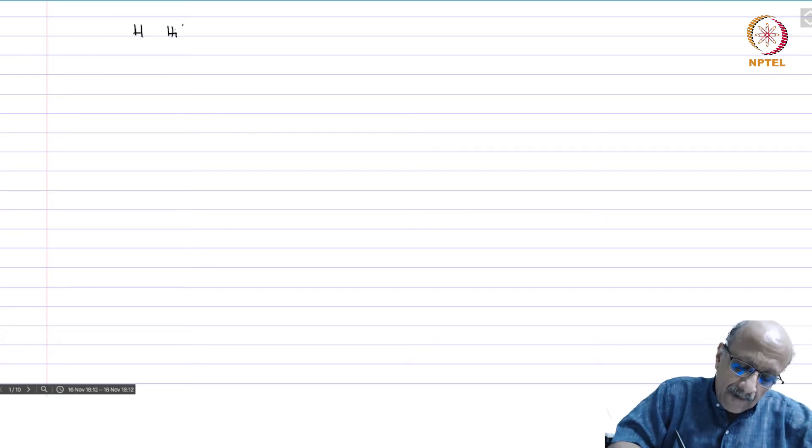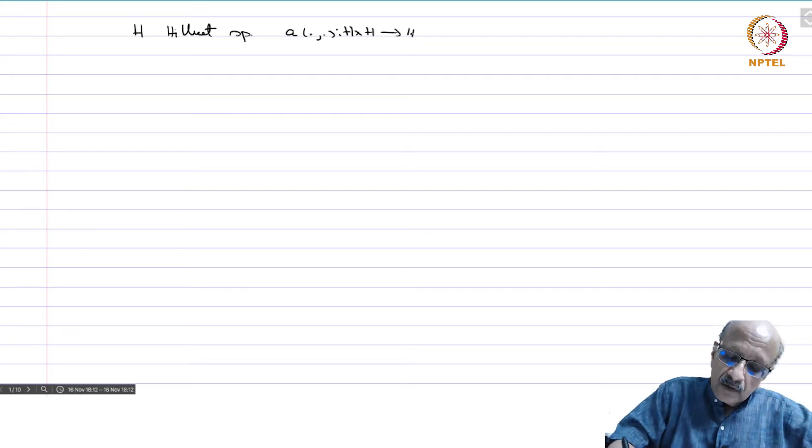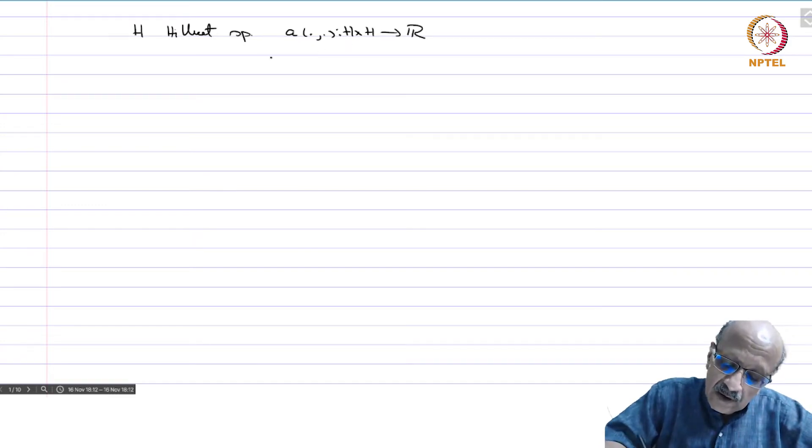Let me recall the Lax-Milgram Lemma. H is a Hilbert space, and A from H × H to ℝ (taking a real Hilbert space) is a bilinear form that is continuous, meaning |A(u,v)| ≤ M||u||||v||.